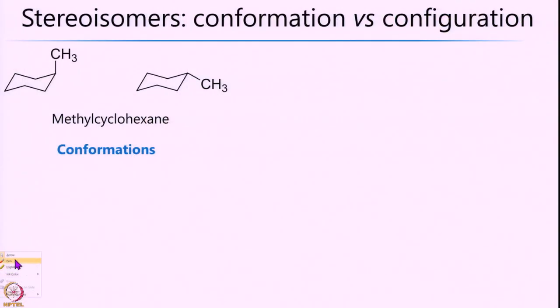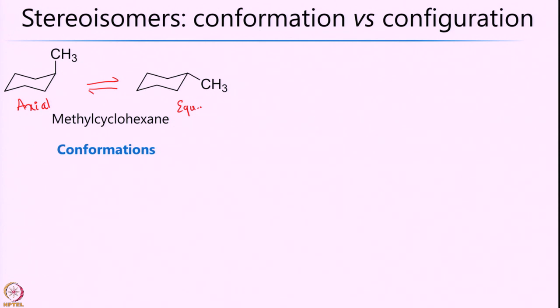This conversion between the axial CH3 and the equatorial CH3 is actually continuously taking place at room temperature. When you buy a bottle of methyl cyclohexane from a commercial source, you always have these two forms equilibrating with one another. You cannot differentiate or distinguish them unless you go to very low temperatures — something like minus 50°C or even lower — where you might start seeing the signatures of these two different forms.